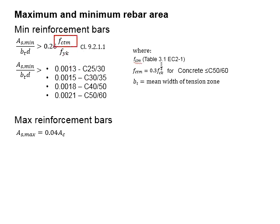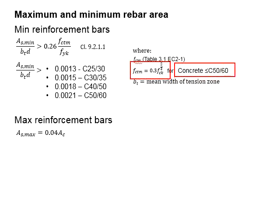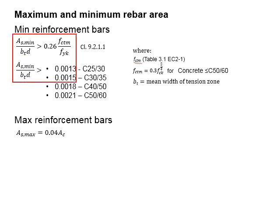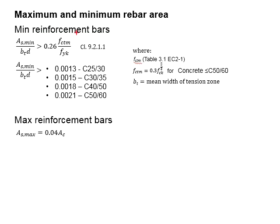The fctm value can be obtained from Table 3.1 of Eurocode 2 Part 1. The equation given applies to concrete lower than 50 MPa grade. For different grades of concrete, the ratios used to determine the minimum reinforcement differ. The minimum reinforcement provided must be the greater of those two areas. The maximum amount of reinforcement is limited to 4 percent of the cross-sectional area of the retaining wall.